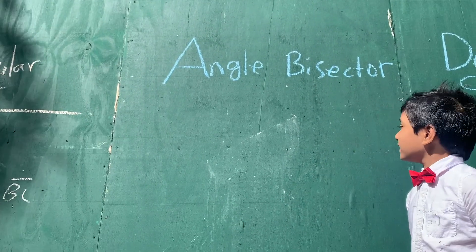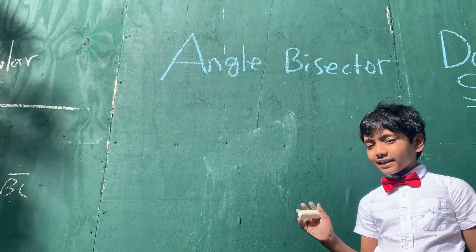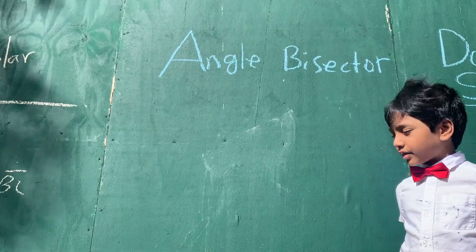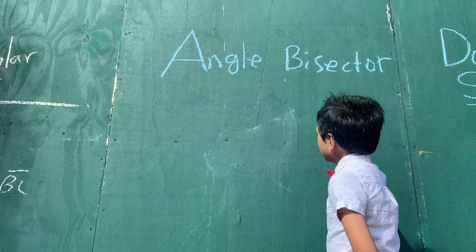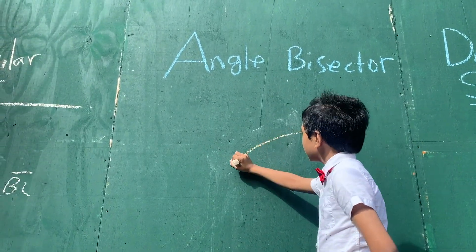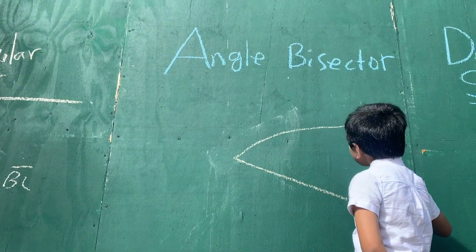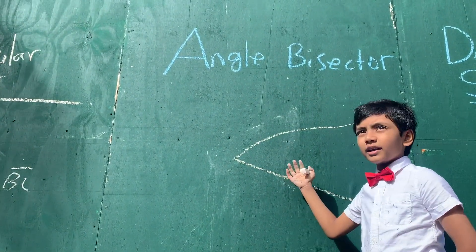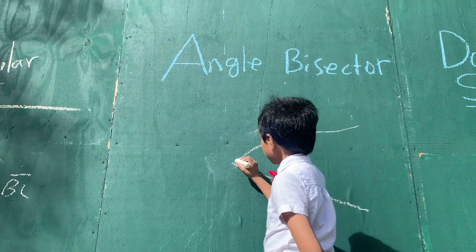So today we're looking at how to bisect an angle. First let's draw two lines that will make our angle. And now we have an angle.